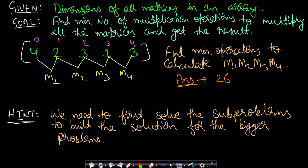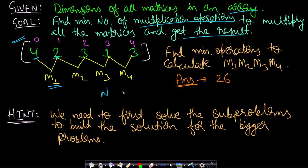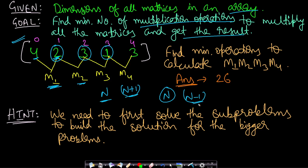Now let us move to the problem statement. We are given dimensions of all matrices in an array, and our goal is to find the minimum number of multiplication operations to multiply all matrices and get the result. We can multiply in any order and get the same result, but we want to minimize the number of multiplication operations to make it more efficient. If you have n matrices, you will have n+1 elements in the array denoting dimensions, since internal values are superimposed — the number of columns in M1 equals the number of rows in M2. So if you have n elements in the array, you will have n-1 matrices.